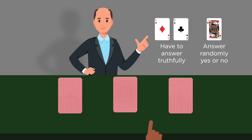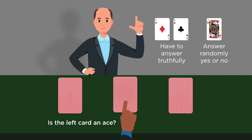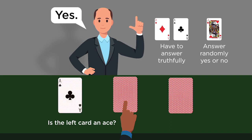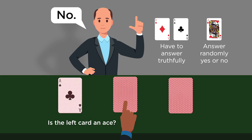Are you ready for the solution? Here we go. One question that works is to point to the middle card and then ask, 'Is the left card an ace?' Let's consider the possibilities. Suppose you're pointing at an ace — then, according to the rules, I'll answer truthfully. If I now say yes, then the left card is an ace. And if I say no, then the right card must be the second ace.